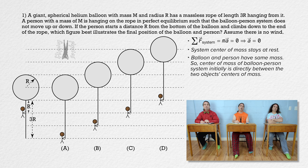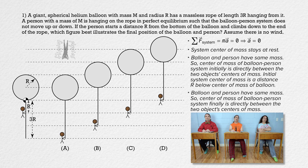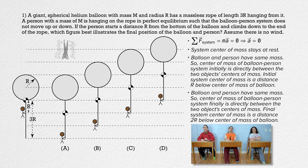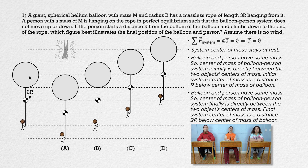In other words, because the initial distance between the two objects is 2R, the initial center of mass of the balloon-person system will be half that distance, or a distance of R, from the centers of mass of both objects. Because both objects have the same mass, the final center of mass will again be in the middle. Because the final distance between the two objects is 4R, the final center of mass will be half that distance, or 2R, from the centers of mass of both objects. So as the person climbs down, the center of mass moves from R below the balloon's center to 2R below the balloon's center.